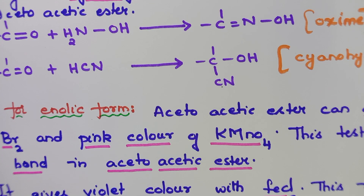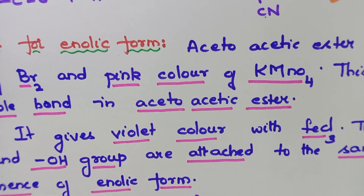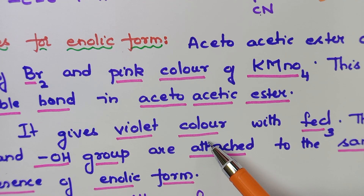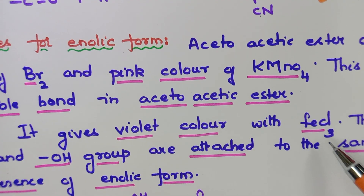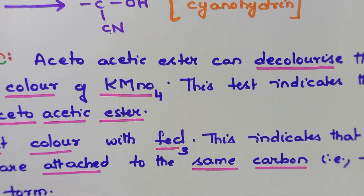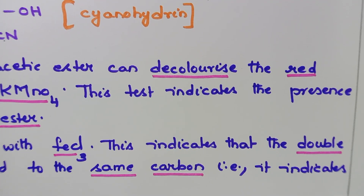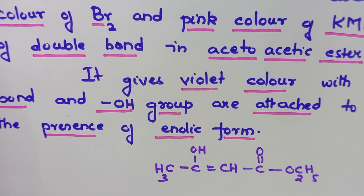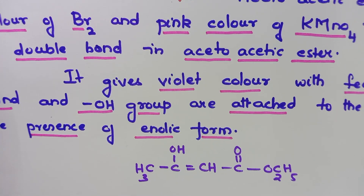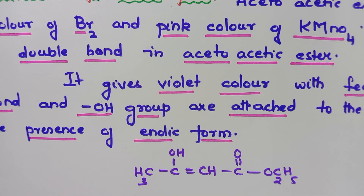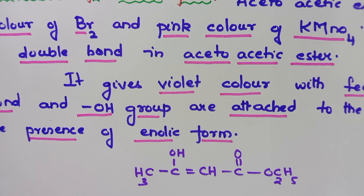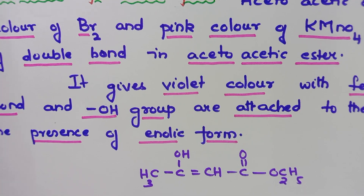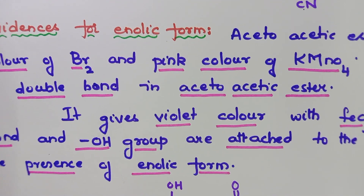Since acetoacetic ester decolorizes the red color of bromine and the pink color of KMnO₄, we can confirm that the enolic form contains a double bond. Additionally, when acetoacetic ester is treated with FeCl₃ (ferric chloride), a violet color is formed. This violet color with FeCl₃ confirms that both the double bond and the OH group are attached to the same carbon, indicating the presence of the enolic form.